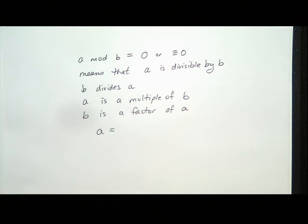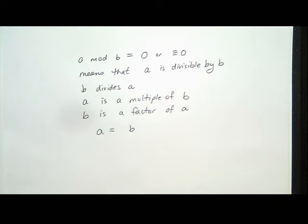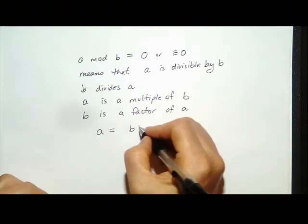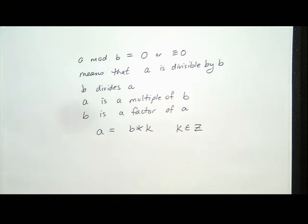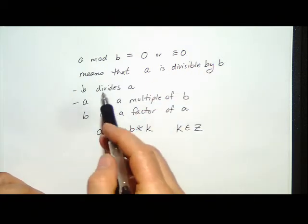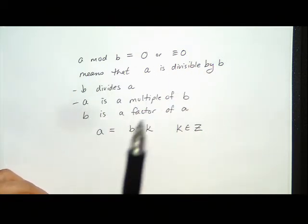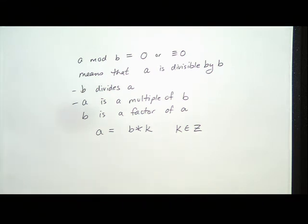If A mod B is zero, I can write A equals B times K, where K is an integer — that's the definition of divisibility. If A mod B equals 1, then A equals BK plus 1, where K is an integer. In general, if A mod B equals C, then A equals BK plus C. These are all equivalent statements.